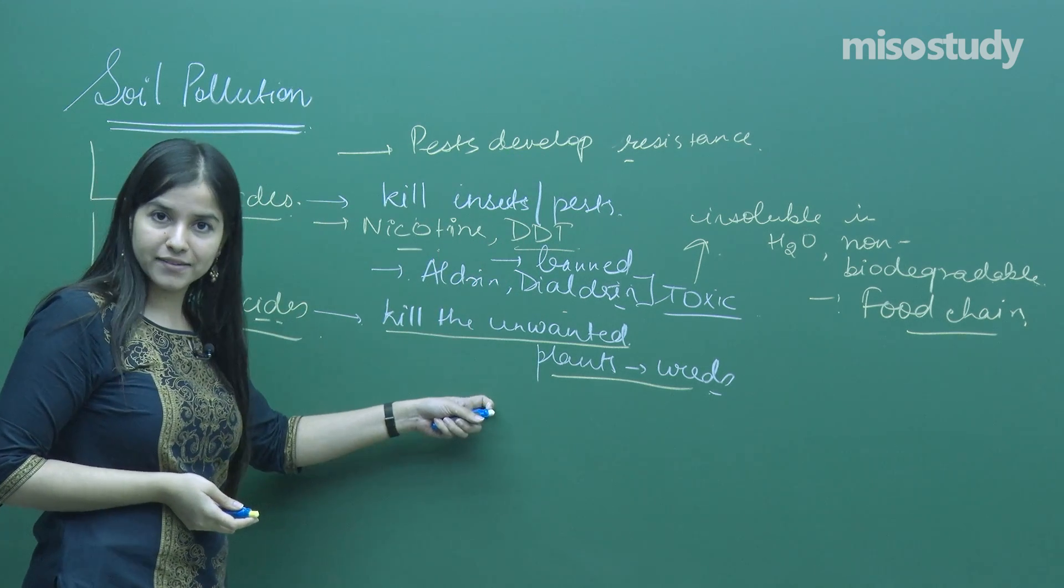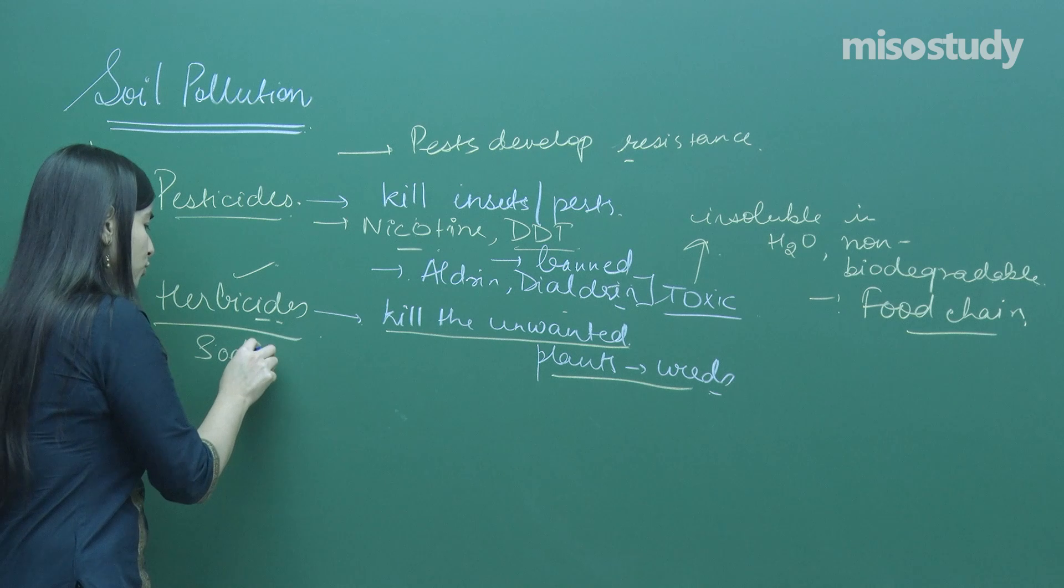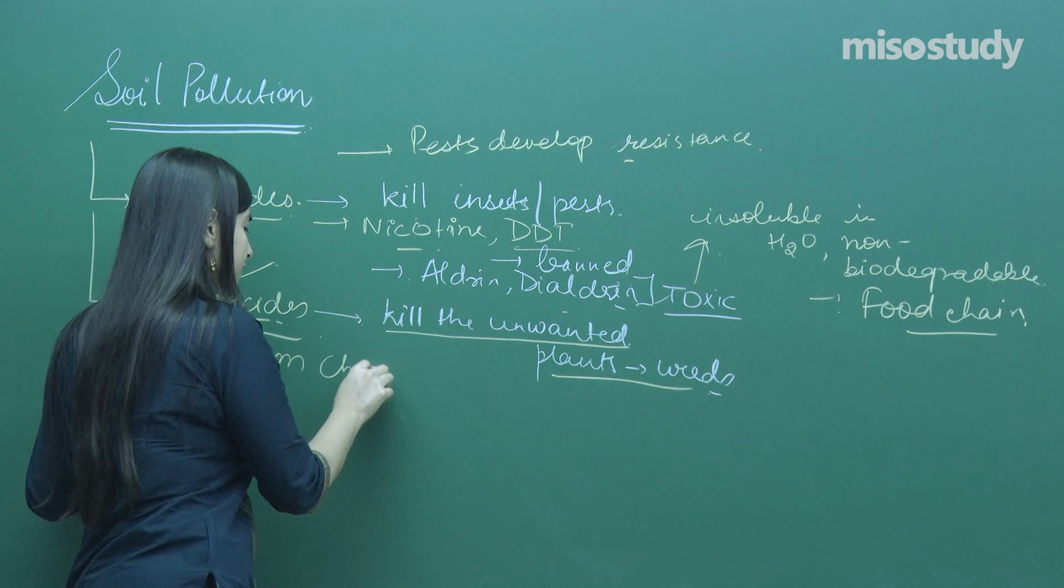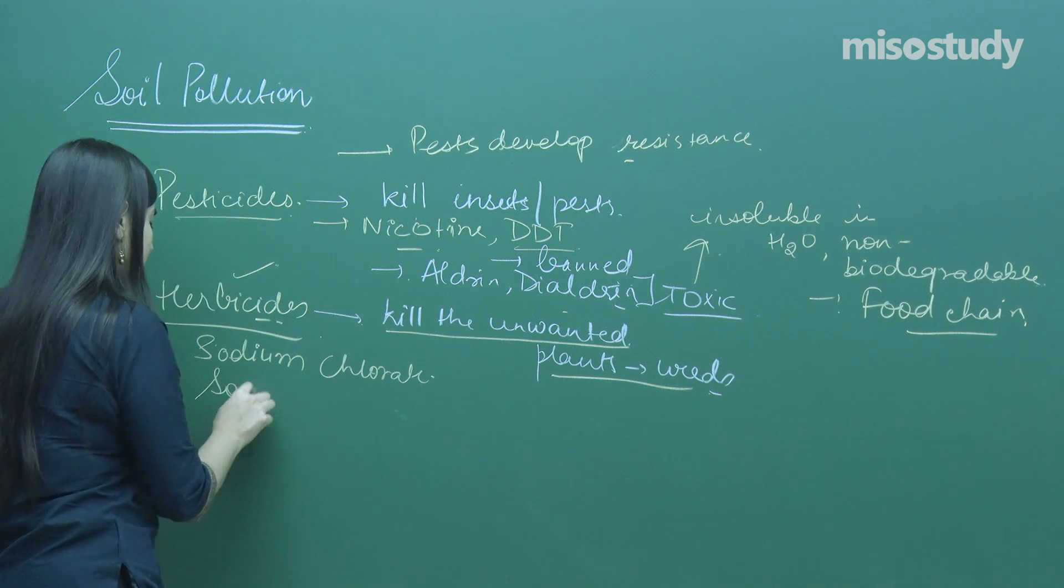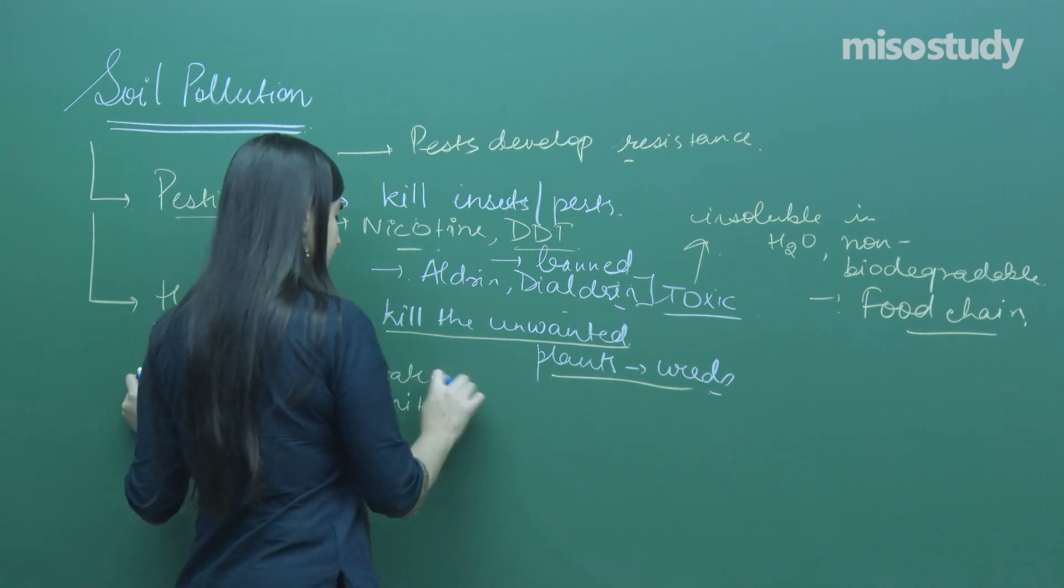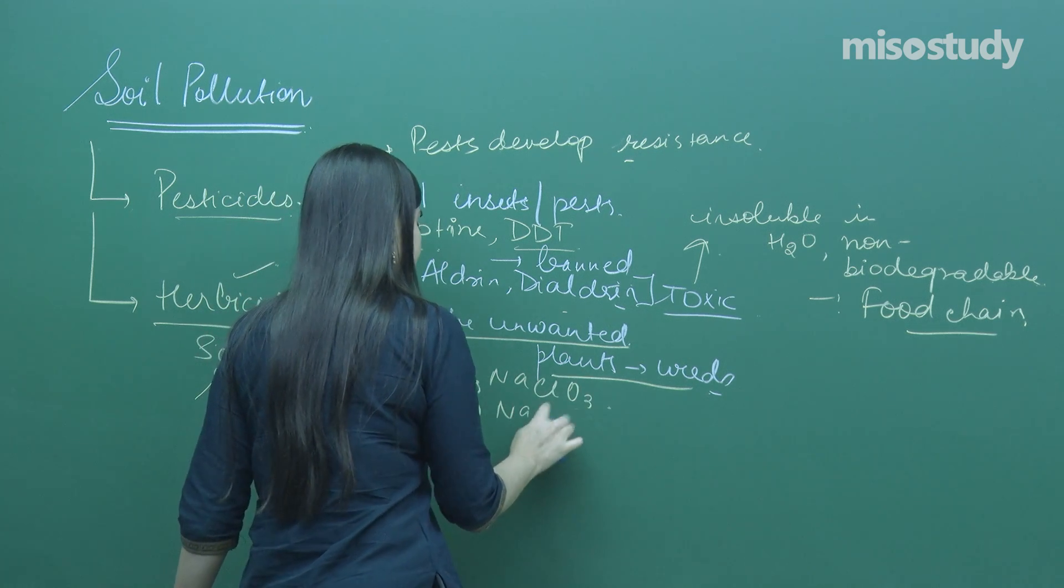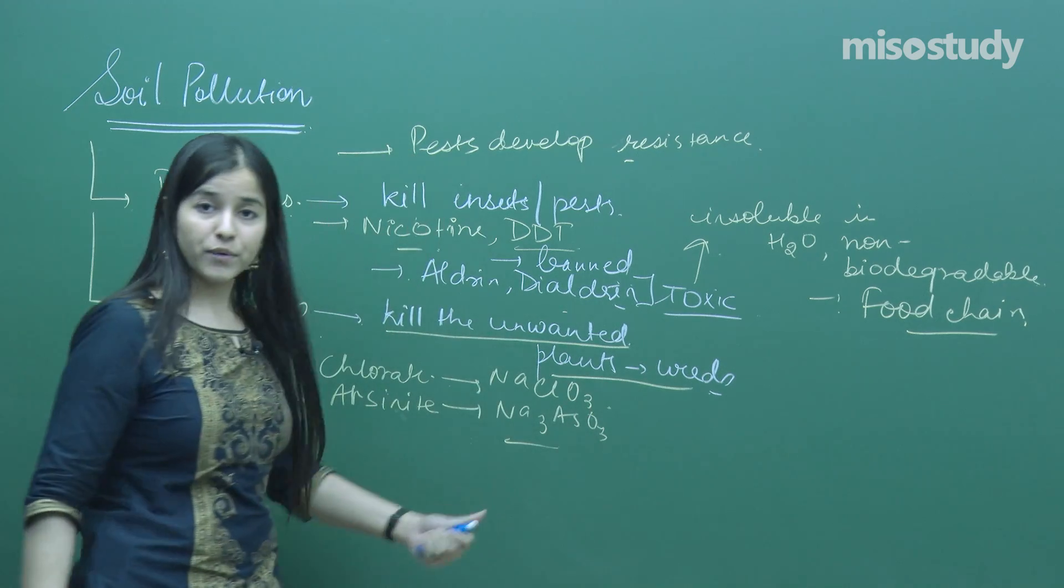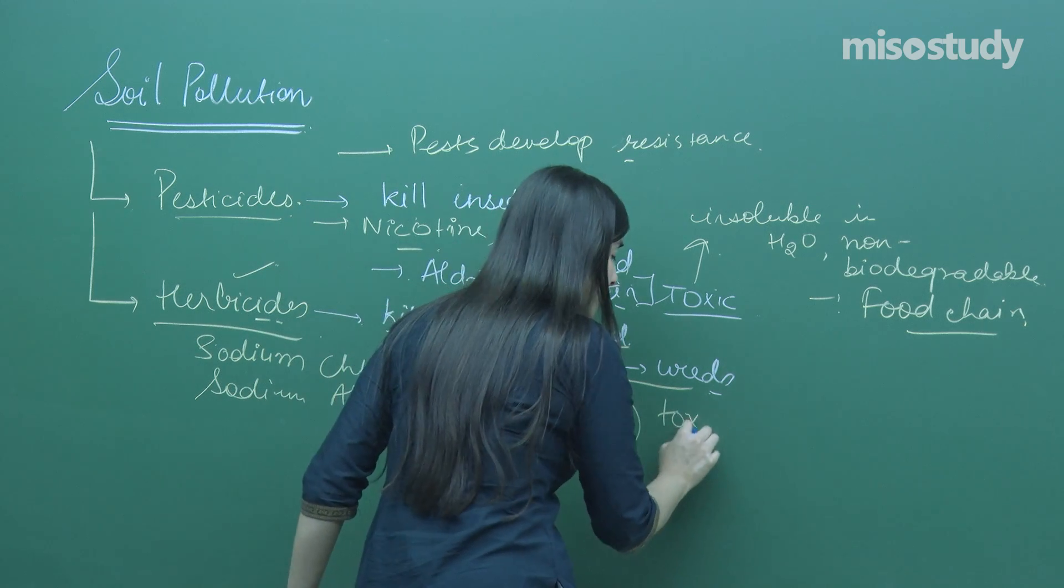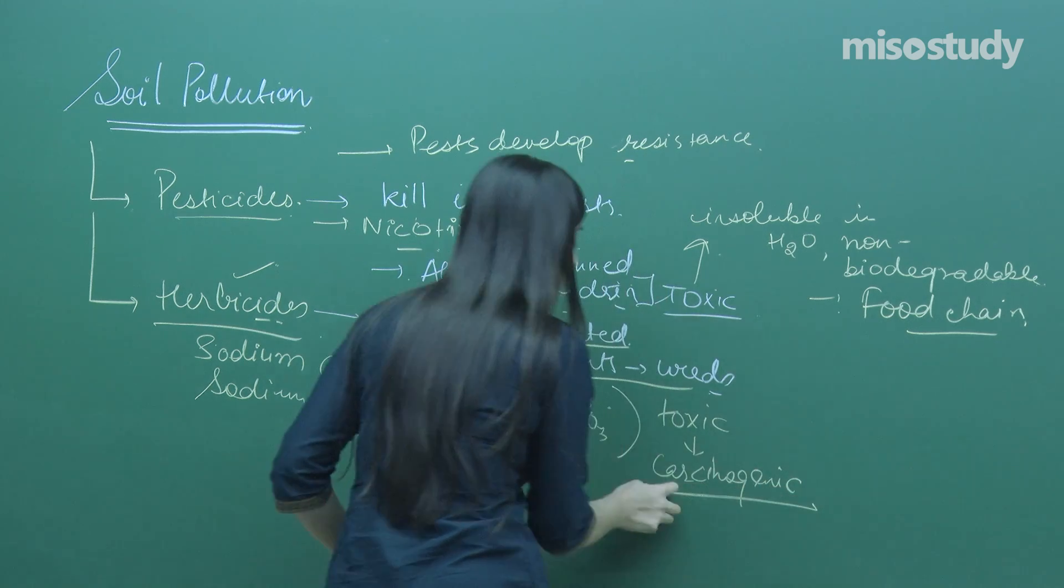For unwanted plants, herbicides are employed. Sodium chlorate (NaClO3) and sodium arsenide (Na3AsO3) are commonly used. Again, herbicides are toxic to human beings and carcinogenic.